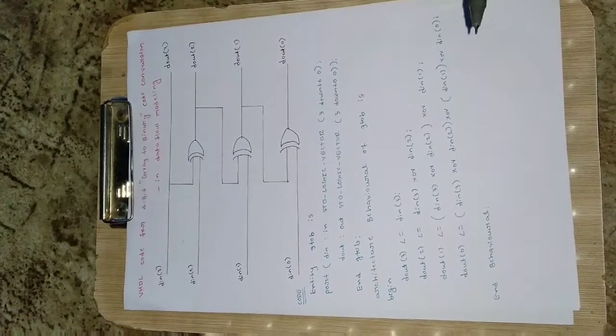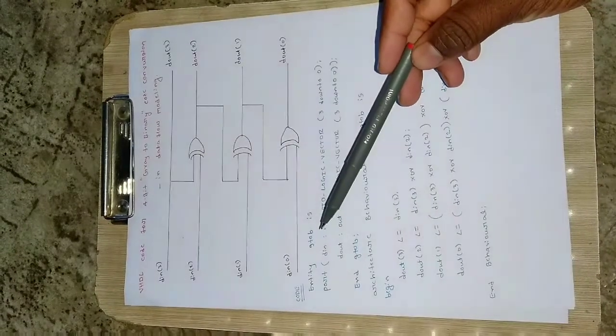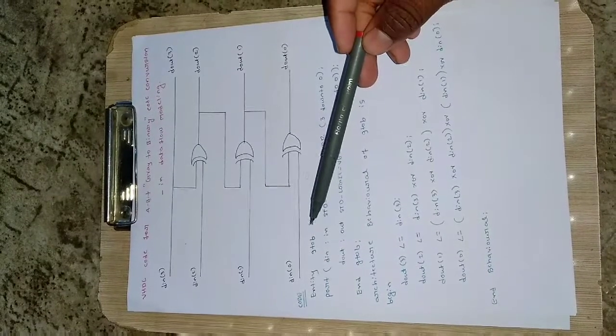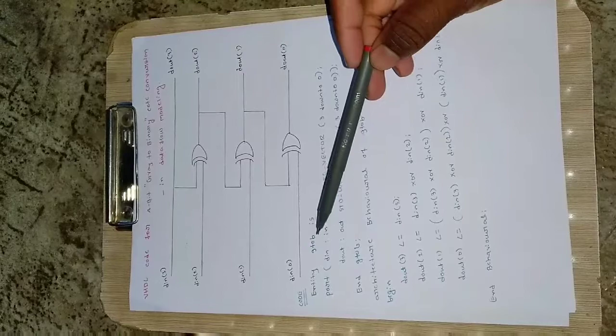Let us try to see how I can write the data flow code for this one. So I will define entity. Entity G to B I have written, means gray to binary. You can write any name, it is your choice, so there is no restriction on writing this entity name.